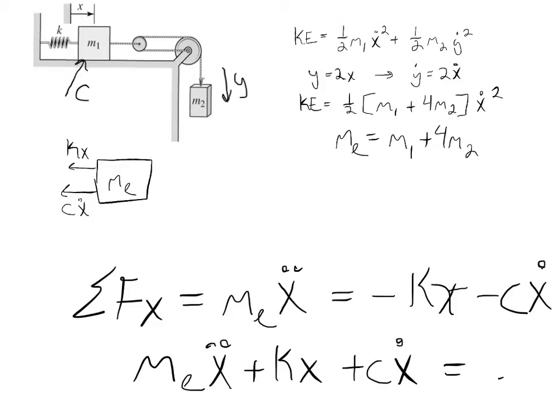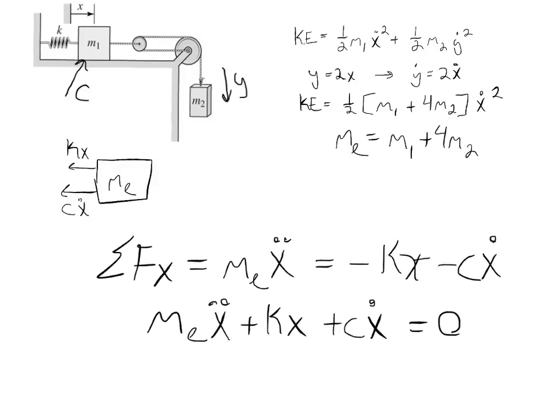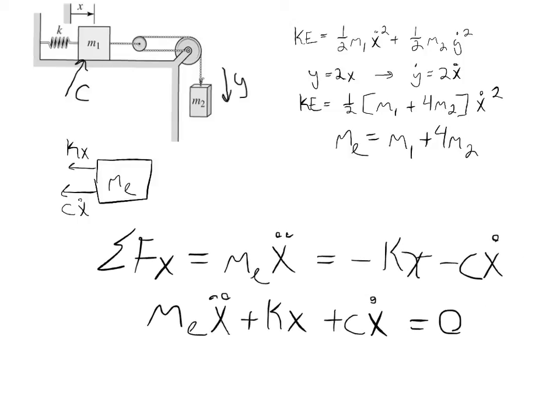So if the overall equation is mE x double dot plus kx plus cx dot, I kind of put them out of order there. And that is the ordinary differential equation, or the equation of motion for this system.